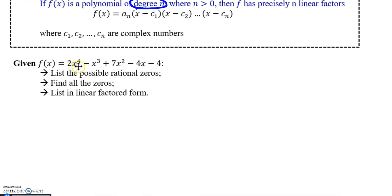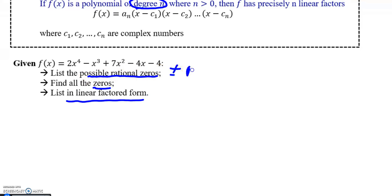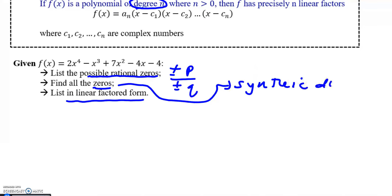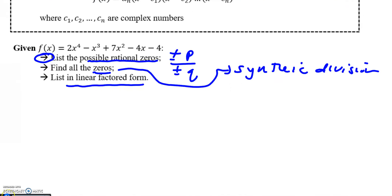For this next example with 2x to the fourth, I should have four linear factors in the end. My goal is to list all possible rational zeros, find all actual zeros, and list in factored form as a function. I'll take this in parts. For all possible zeros, this is the plus or minus p over plus or minus q idea. Then to find all actual zeros, I want to use synthetic division. Please pause and see if you can find all the possible rational zeros first.